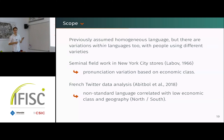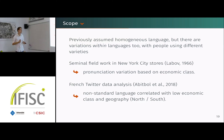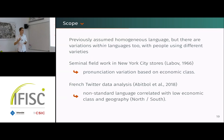Here we study variations within language — in particular how people use different varieties — relating that to their socioeconomic status. The seminal work here is by William Labov in 1966. By interviewing people in New York City stores of different levels — high-end versus lower-end — he found a clear pronunciation variation based on economic class.